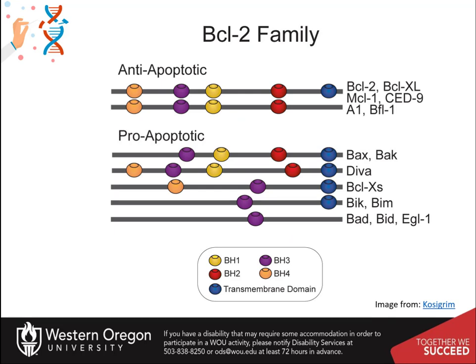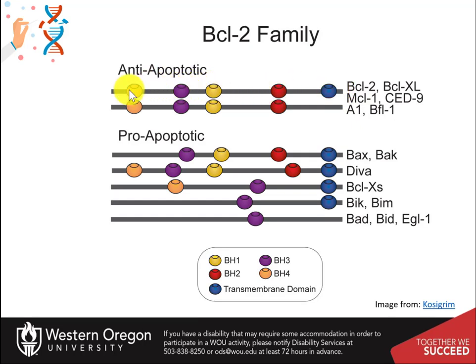The members of the BCL-2 family share one or more of the four characteristic domains of homology, entitled BCL-2 homology (BH) domains, named BH-1, BH-2, BH-3, and BH-4. The BH domains are known to be crucial for function. The anti-apoptotic BCL-2 proteins, such as BCL-2 and BCL-XL, tend to conserve all four BH domains. The BH domains also serve to subdivide the pro-apoptotic BCL-2 proteins into those with several BH domains, like BAX and BAK, or those proteins that only have BH-3 domains.